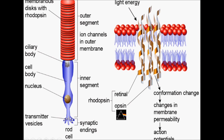When a light ray or photon strikes the rod cell, retinal and opsin — the two proteins that together form rhodopsin — undergo conformational changes. This changes membrane permeability, and an action potential is generated. Through this, our brain can interpret images in the erect form, because an inverted image is formed on the retina but the brain, via the occipital lobe, interprets it as erect.